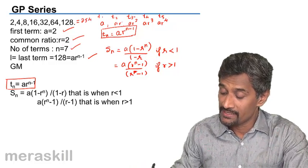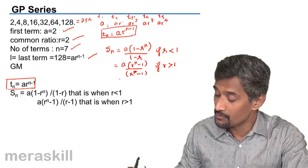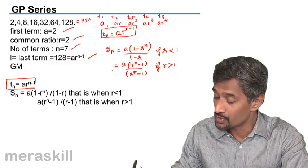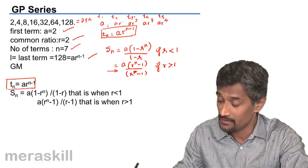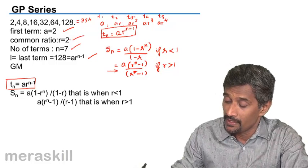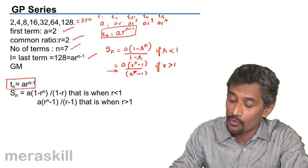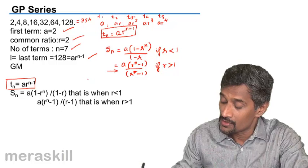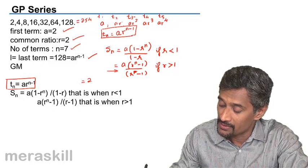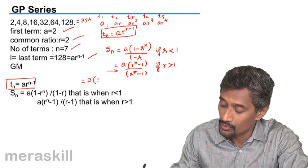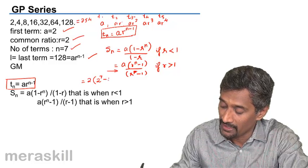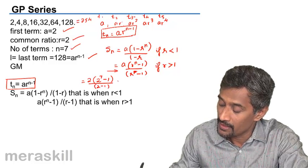In this case R equals 2. Which formula do we use? We use the second formula because R is greater than 1. There are 7 terms. A is 2, R is 2. So it's 2 raised to 7 minus 1 upon 2 minus 1.